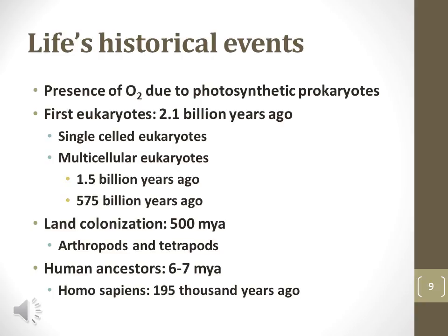Major events in Earth's history include the production of atmospheric oxygen by prokaryotes. The first single-celled eukaryotes appear over 2 billion years ago. The first multicellular groups of eukaryotes, including plants and animals, began to emerge over 1 billion years ago. Colonization of land by insects and chordates took place approximately half a billion years ago. Human ancestors split from our closest living relatives, the chimpanzees, over 5 million years ago and began resembling modern humans roughly 200,000 years ago.